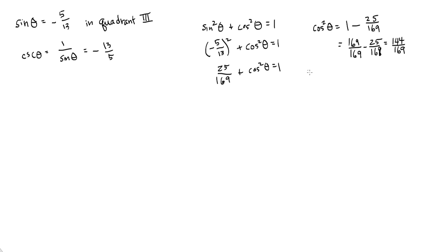I can rewrite 1 as 169 over 169 minus 25 over 169 gives me 144 over 169. So if I square root both sides, I get the cosine of theta equals plus or minus the square root of 144 over 169. We know that the square root of 144 is 12.